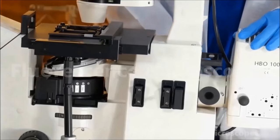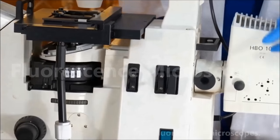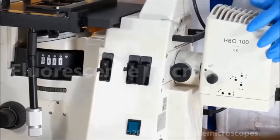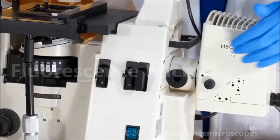On the back we have a viewing aid. This is used to center your bulb and your HBO lamp housing.